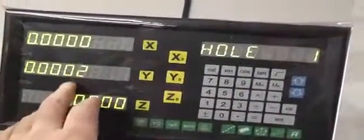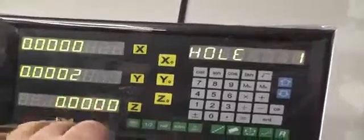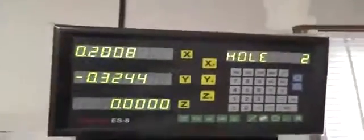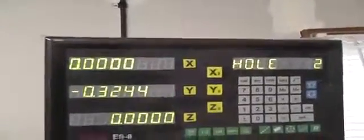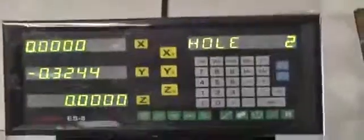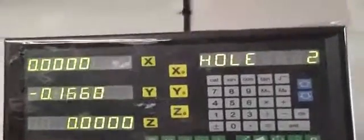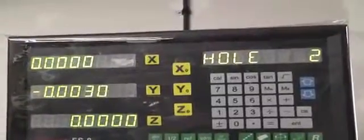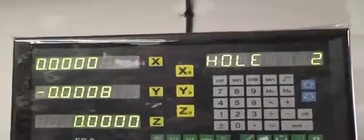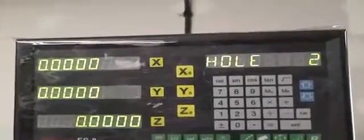So to go to hole two, we're going to hit the down button - hole two. And now we just have to zero out these coordinates here for your X. So we'll get zeroed out and then for our Y. And now we'll go ahead and drill hole two.